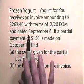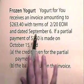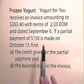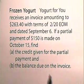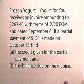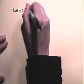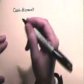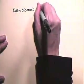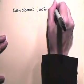Now let's look at determining credit for the partial payment of an invoice. Yogurt for You receives an invoice amounting to $263.40 with terms of 2/20 end-of-month, dated September 6th. A partial payment of $150 is made on October 15th. The discount date is 20 days after the end of September, so the customer is entitled to take the 2% discount. The cash discount earned on the partial payment means we use 100% minus 2%, which equals 98%.